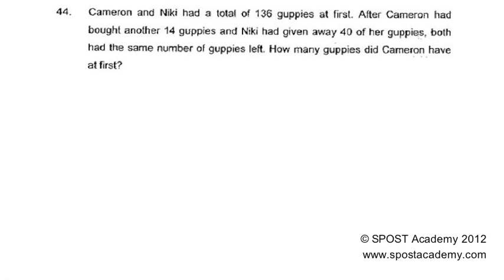Cameron and Nicky had a total of 136 guppies at first. After Cameron had bought another 14 guppies and Nicky had given away 40 of her guppies, both had the same number of guppies left. How many guppies did Cameron have at first? Looking at the first sentence, Cameron plus Nicky has a total of 136 guppies.